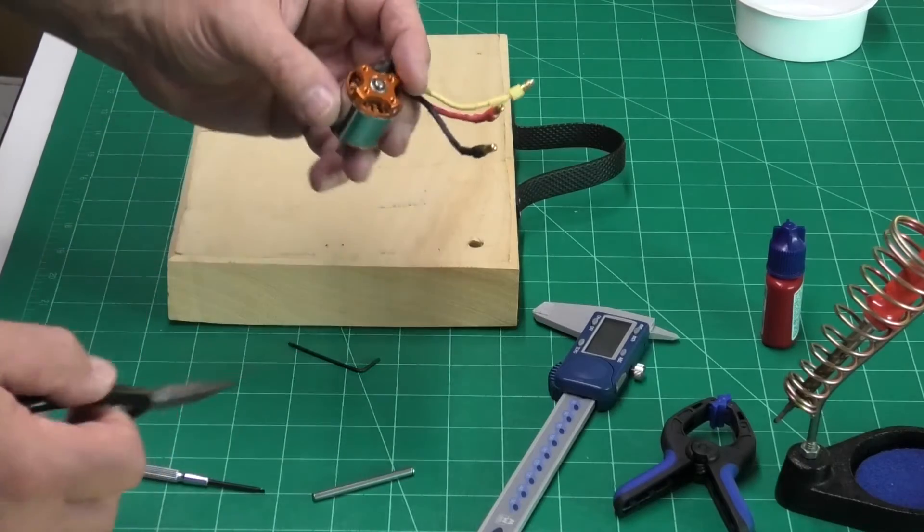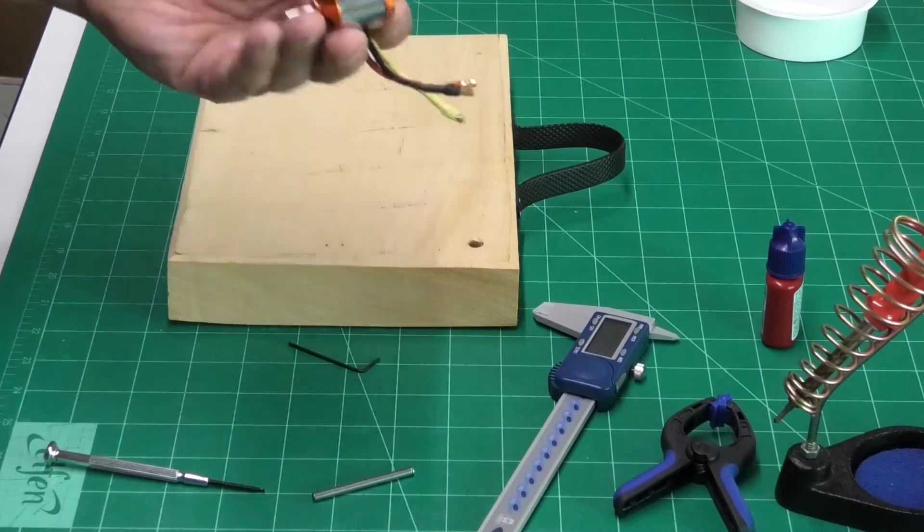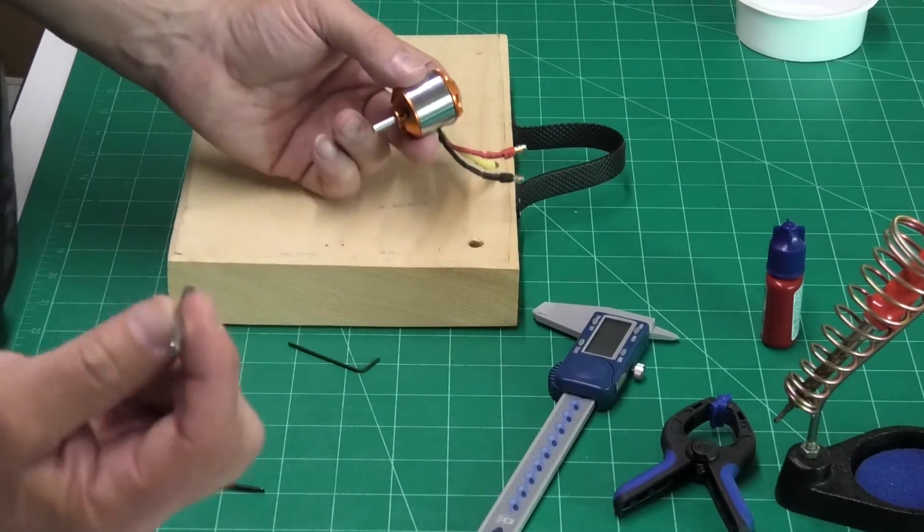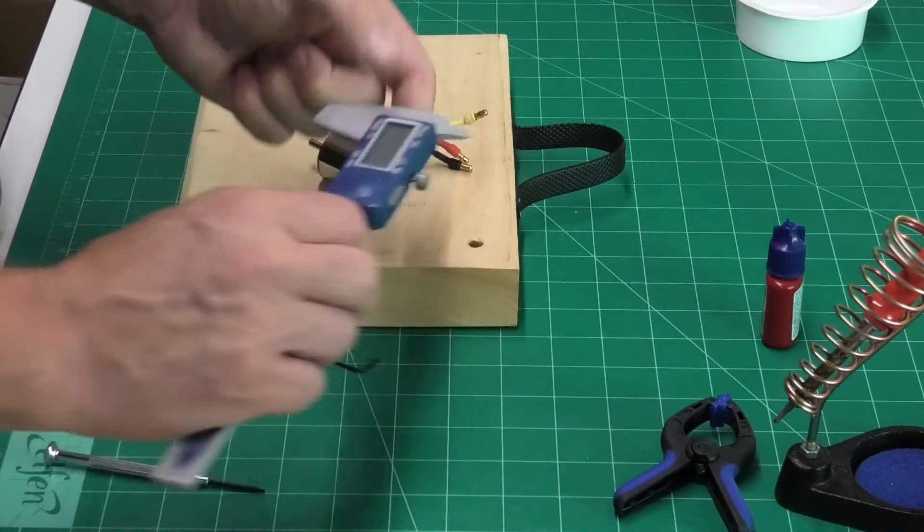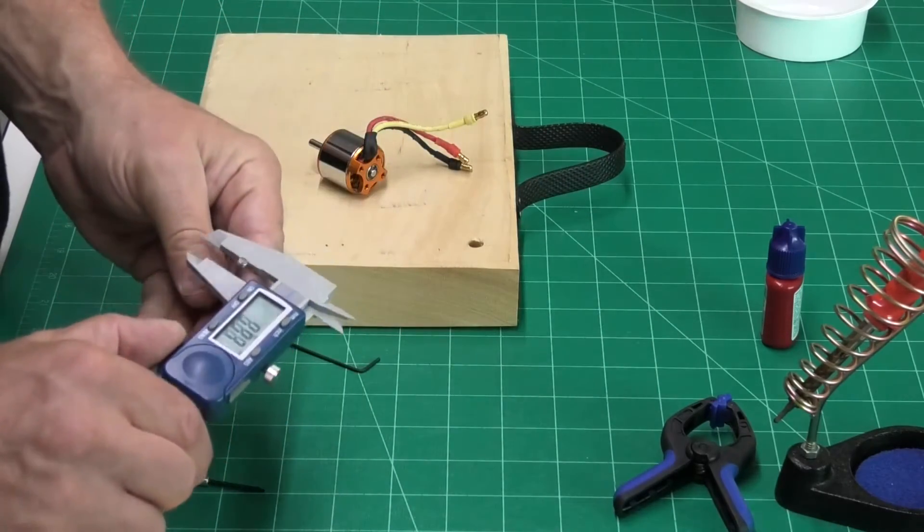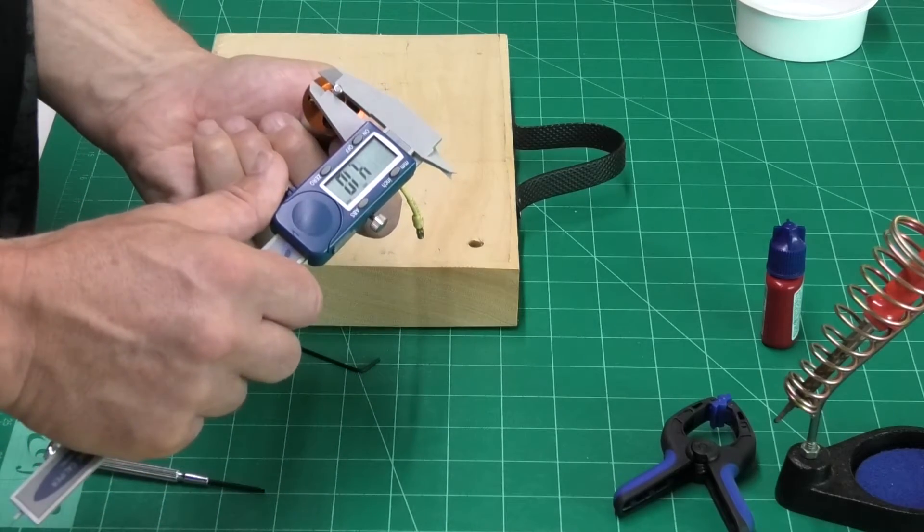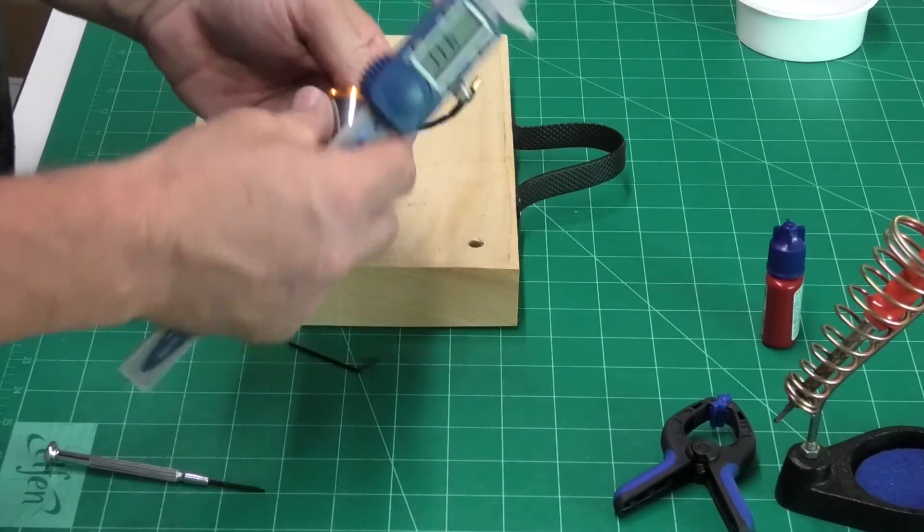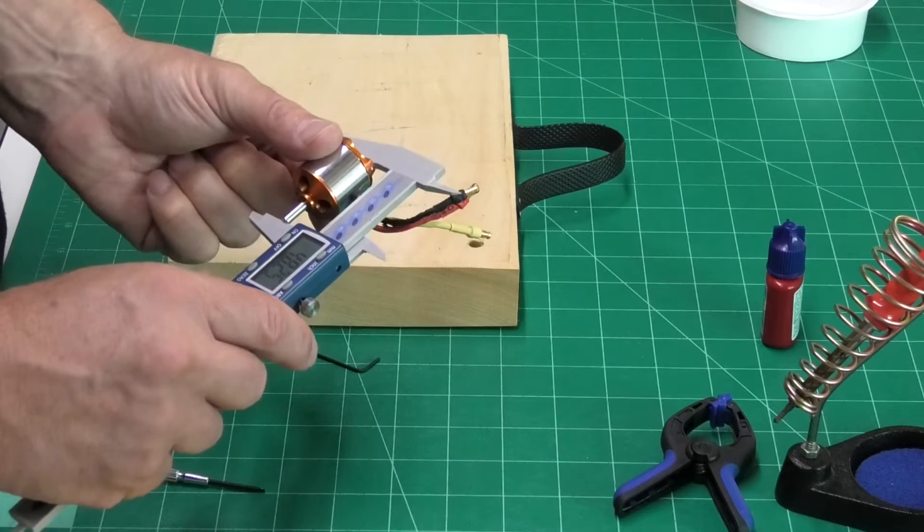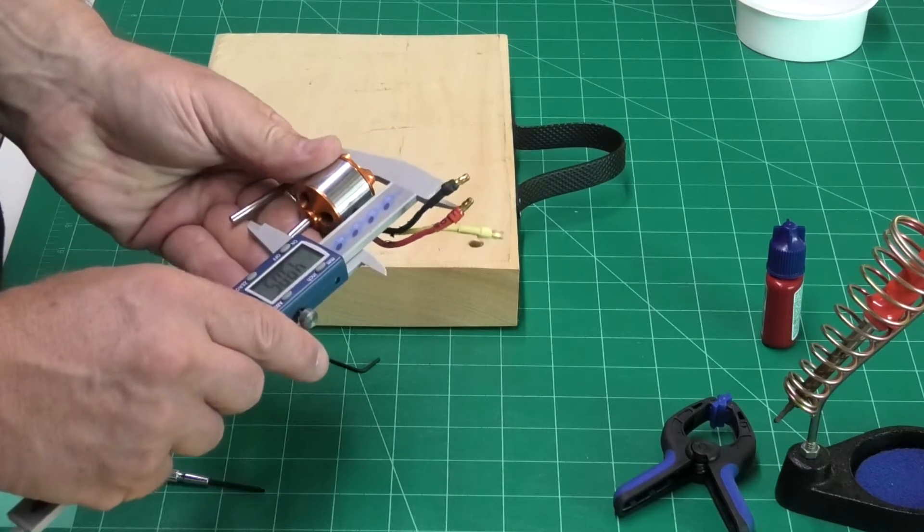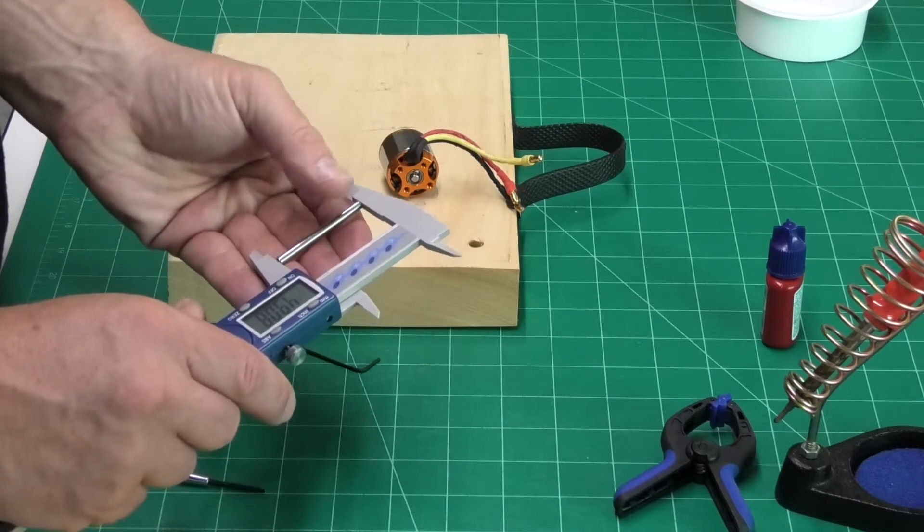Okay, so the first thing we need to do is actually measure the old spindle and the new spindle and just make sure they're the same. Well, both spindles are 4 millimeters, which is good. The length though is slightly different. This one is 47 millimeters and this one is 49 millimeters.